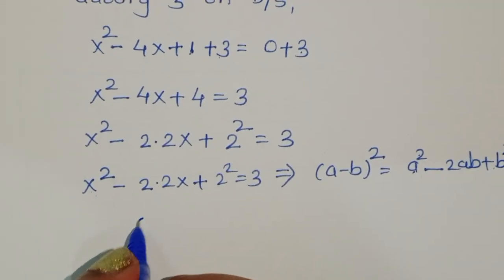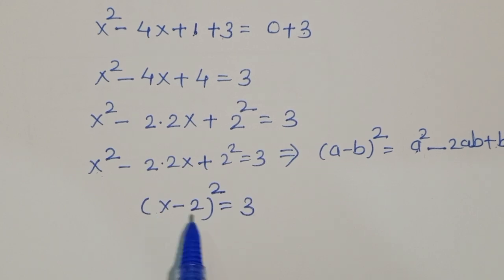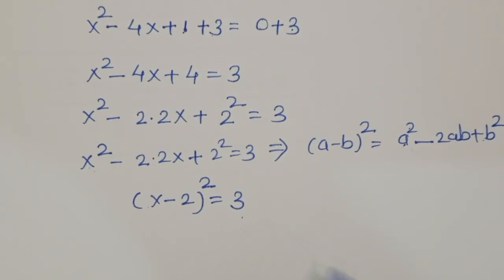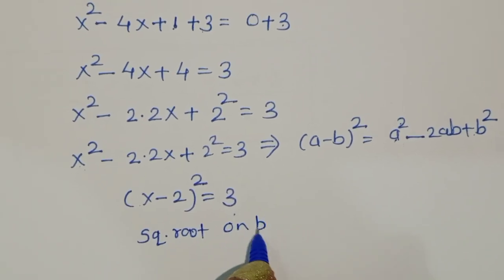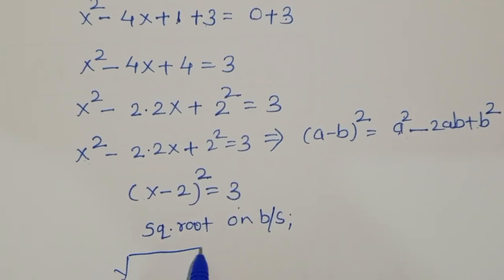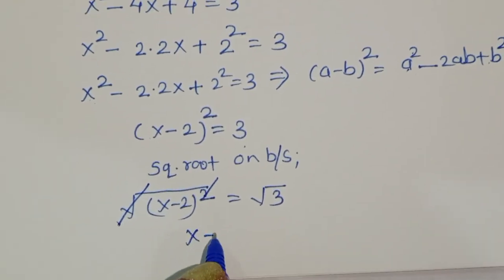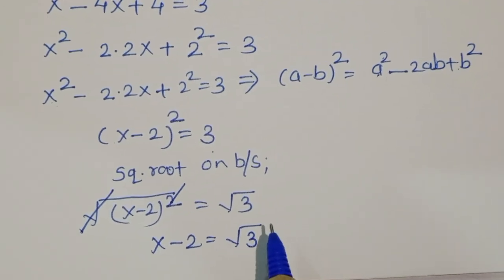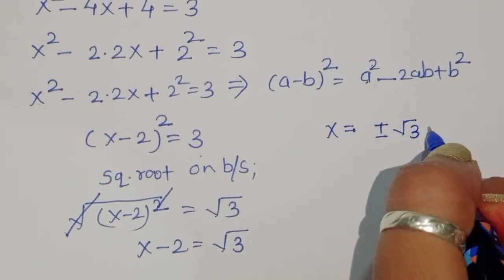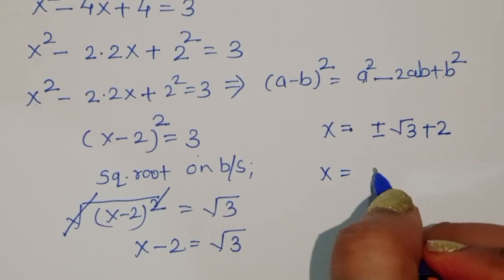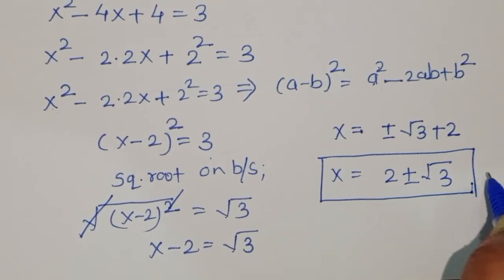So we have x square minus 2 times 2x plus 2 square equals 3, which is in the form of (a minus b) whole square, where a equals x and b equals 2. Therefore (x minus 2) whole square equals 3. Taking square root on both sides, x minus 2 equals square root of 3. So the value of x equals 2 plus or minus square root of 3. This is the solution.